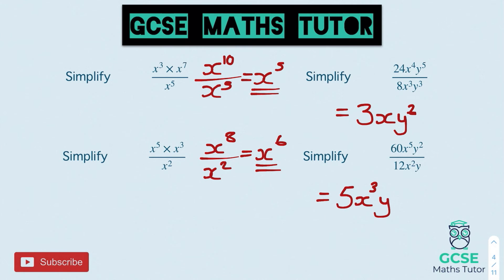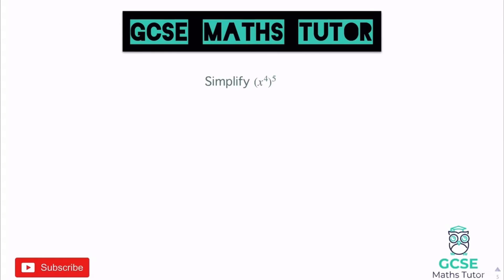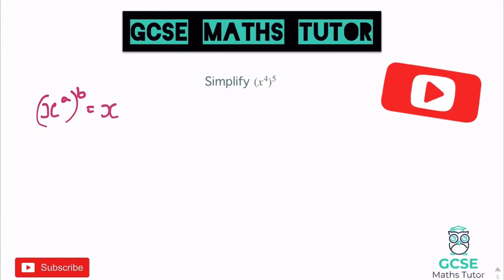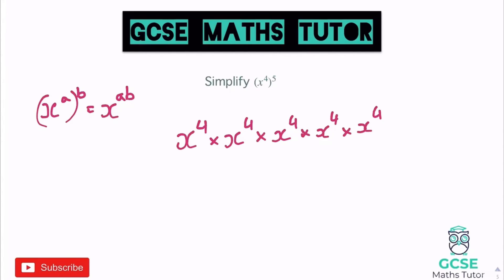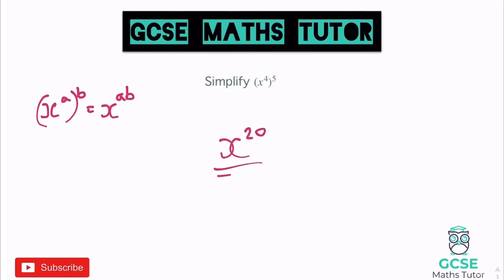Now let's look at brackets. When you have x to the power of a, all in brackets to the power of b, you multiply the powers, giving x to the power of a times b. Logically, x to the power of 4 in brackets to the power of 5 means x to the power of 4 multiplied by itself 5 times — which is the same as adding four, five times, i.e., 4 times 5 equals 20. So the answer is x to the power of 20.